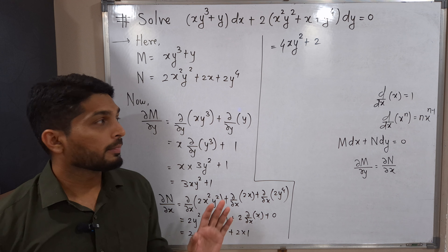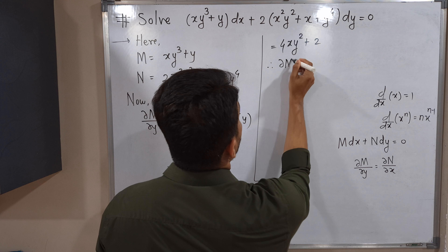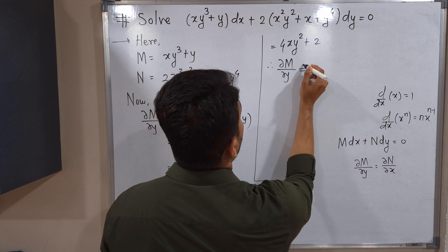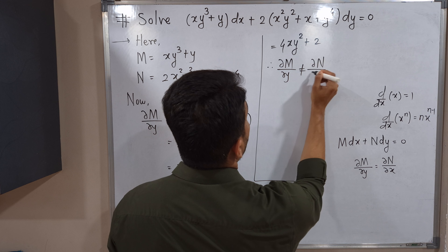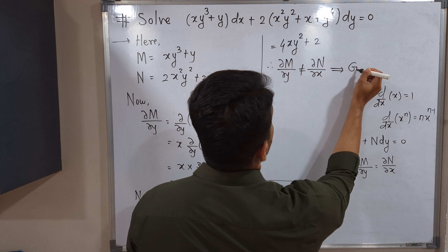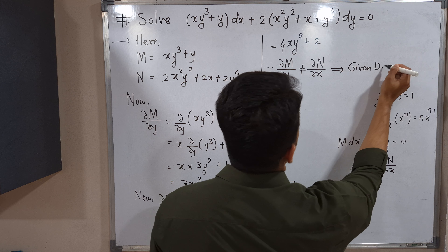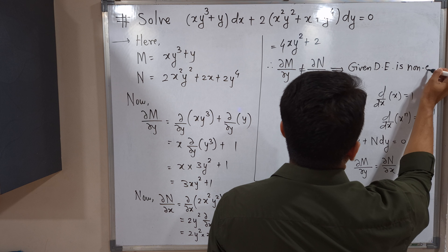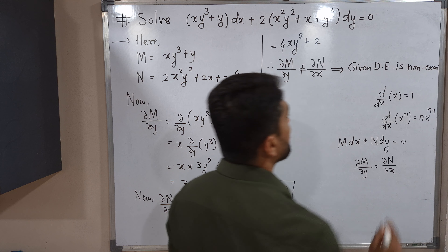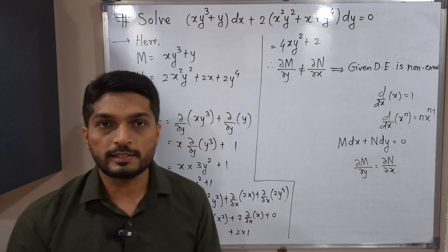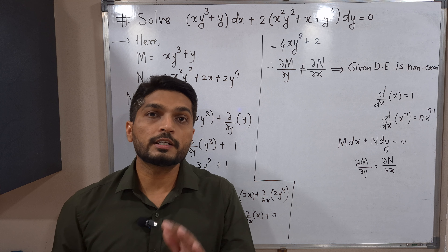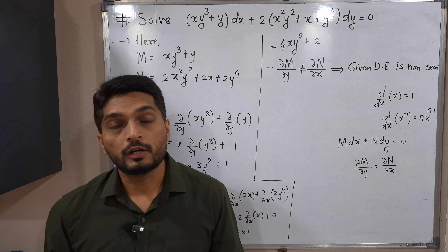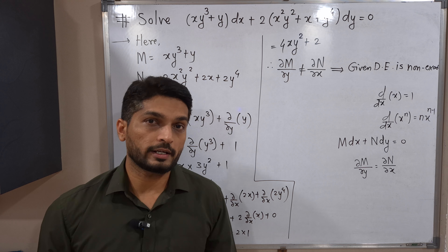Comparing the two: ∂M/∂y = 3xy² + 1 and ∂N/∂x = 4xy² + 2. Both are different, so ∂M/∂y ≠ ∂N/∂x. Therefore the given differential equation is non-exact.